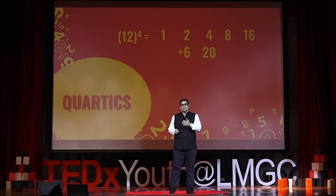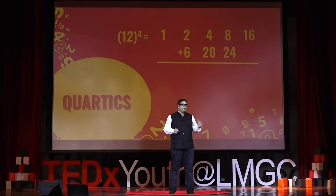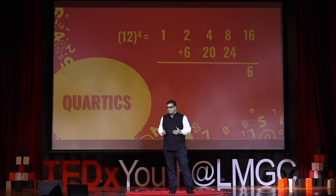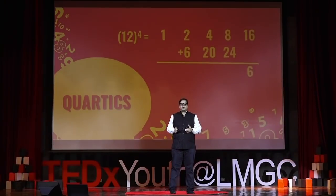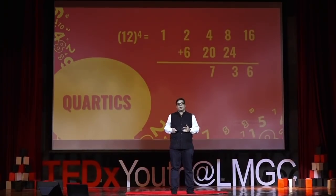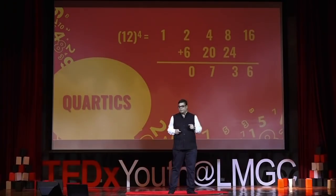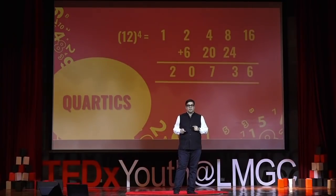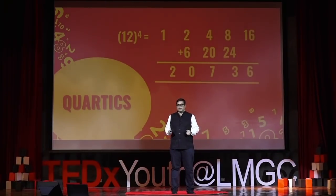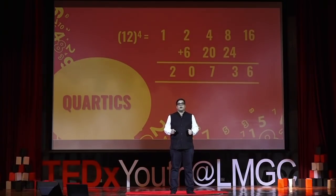Adding the columns: units = 6, carry 1; 8 + 24 = 32, plus carry = 33, so 3 down, 3 carry; 27, so 7 down, 2 carry; then 2 + 2 + 6 = 10, so 0 down, carry 1; 1 + 1 = 2. The final answer is 20736. Ladies and gentlemen, this was the perspective from Vedic Mathematics — to be continued. Vedic Maths is India's newest gift to the world. Thank you very much.